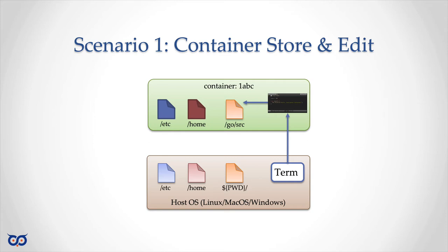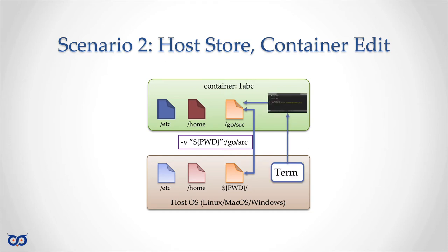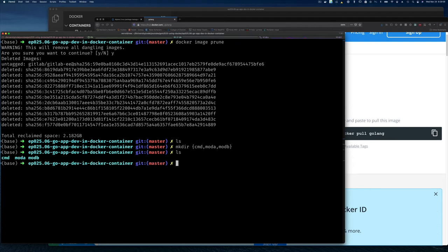The fix is simple — map a local directory into the container. This is Scenario 2: Host Store, Container Edit. The code lives on your host machine so it's never lost when the container stops. You connect to the container like a remote machine, install an editor, and you can test code against a Go version you may not have locally. The only downside is you're using a terminal editor instead of VS Code.